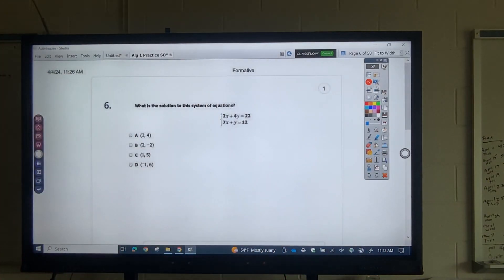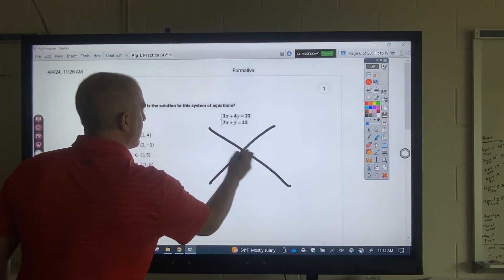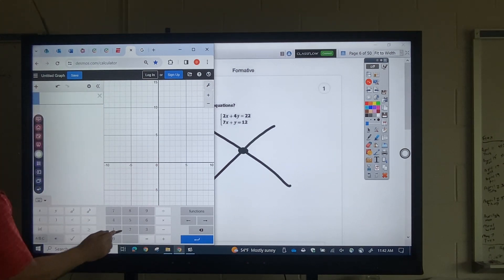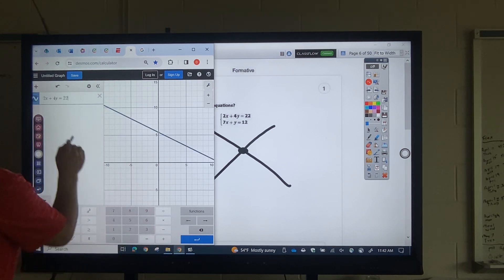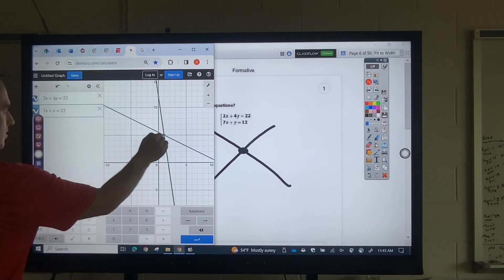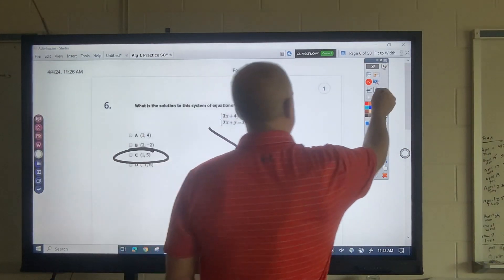Okay, what is the solution? So when I have two equations, I'm looking at where does it cross. So all I got to do is type both equations into Desmos. Okay, look where it crosses. It crosses at 1.5. That's 1.5. That's my answer. Okay.